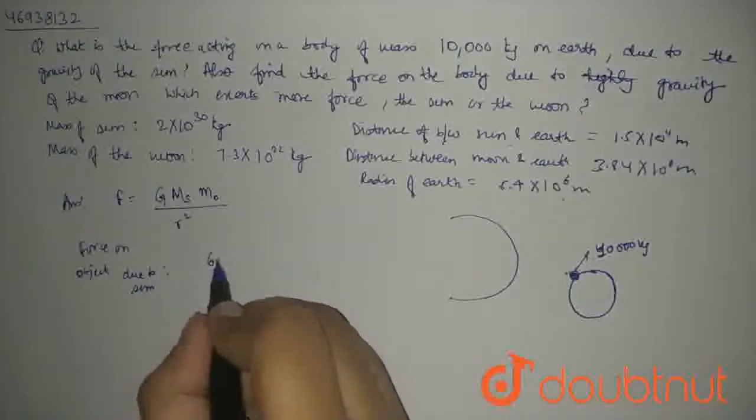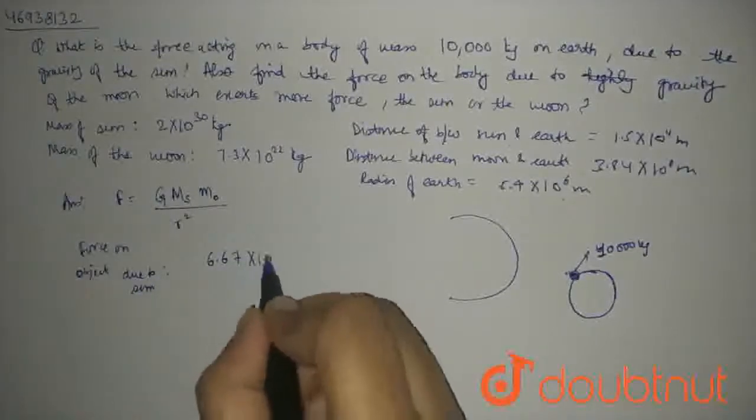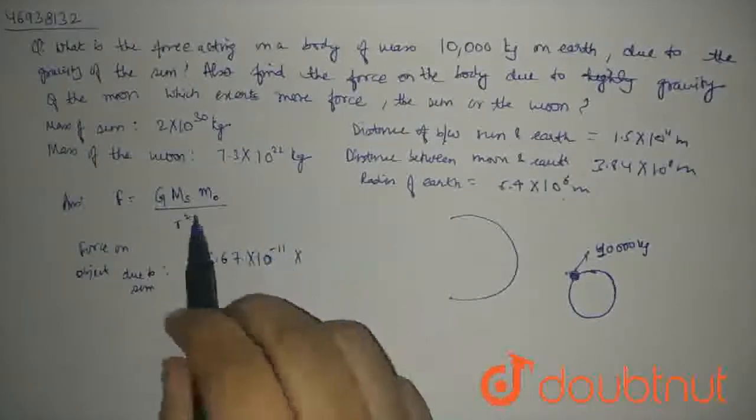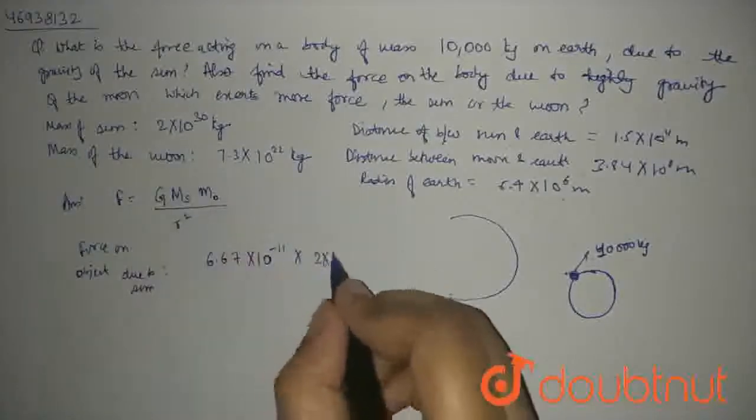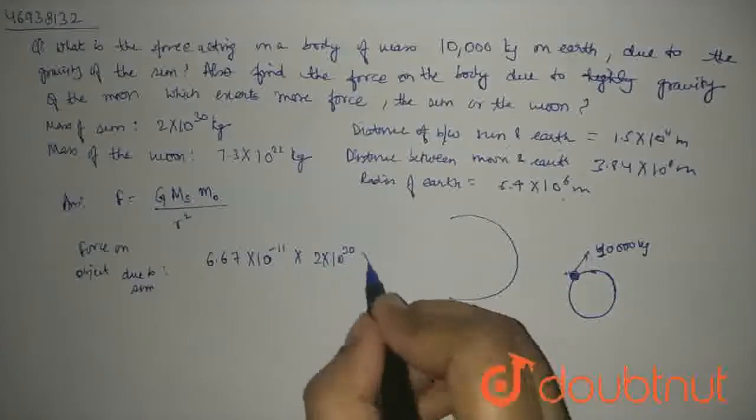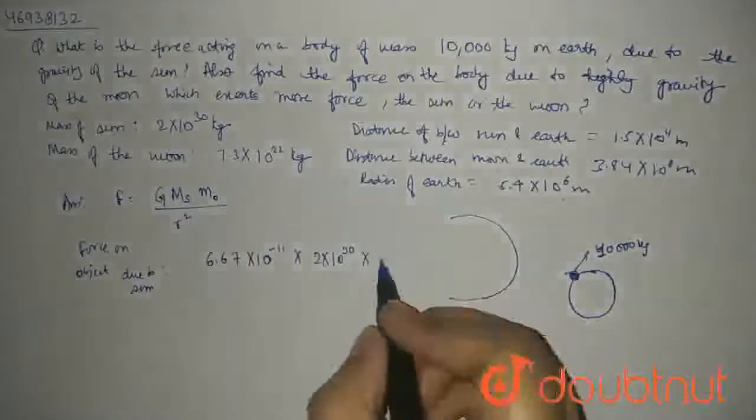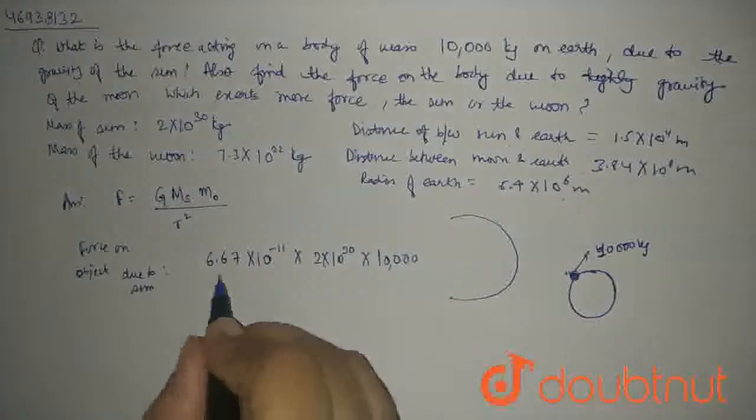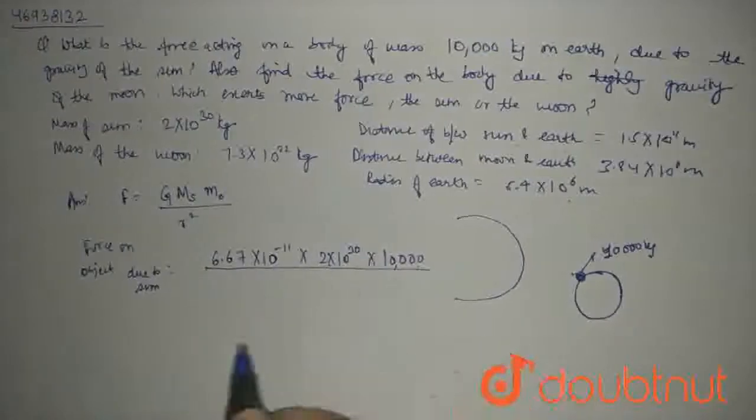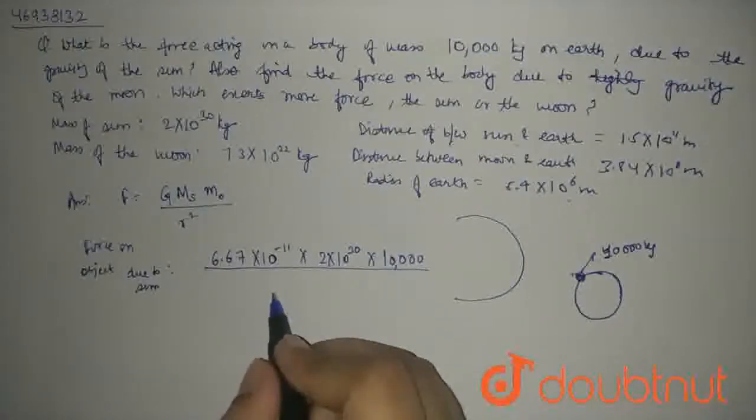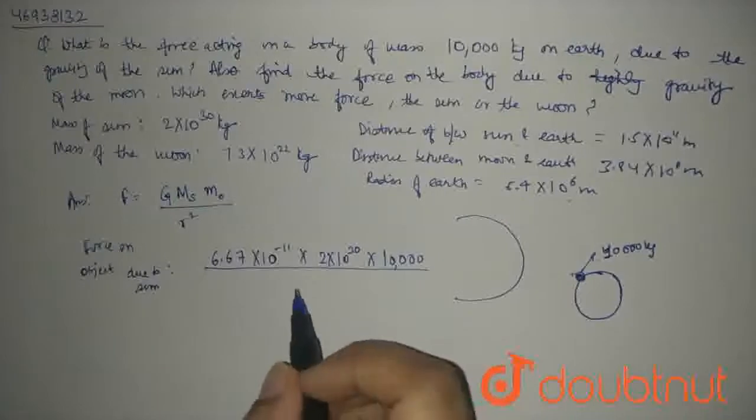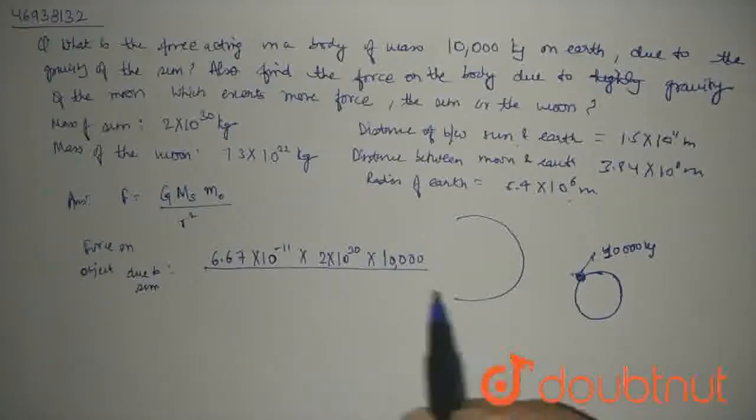G is 6.67 times 10 to the power minus 11, mass of sun is 2 times 10 to the power 30 kg, and mass of object is 10,000 kg. Everything is in kg, so no problem for units. Distance between sun and the object...